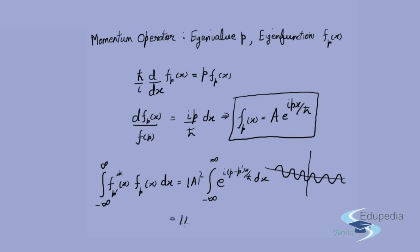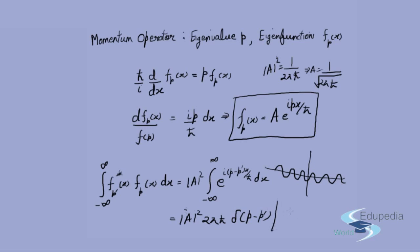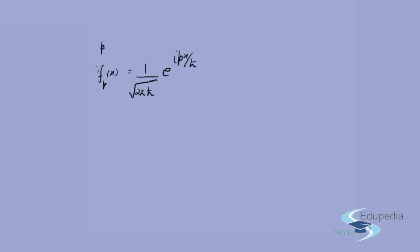This integral is a well-known result: ∫_{−∞}^{∞} e^{i(p−p')x/ℏ} dx = 2πℏ · δ(p − p'). Choosing the normalization constant so that |a|² = 1/(2πℏ), i.e., a = 1/√(2πℏ), gives ⟨f_{p'} | f_p⟩ = δ(p − p'), the Dirac orthonormality relation. The normalized momentum eigenfunction is f_p(x) = (1/√(2πℏ)) e^(ipx/ℏ).